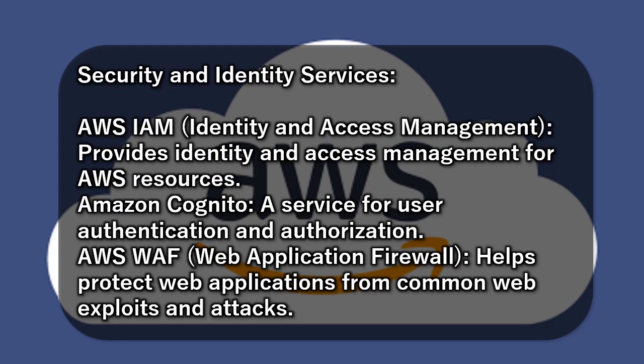Security and Identity Services: AWS IAM (Identity and Access Management) provides identity and access management for AWS resources. Amazon Cognito is a service for user authentication and authorization. AWS WAF (Web Application Firewall) helps protect web applications from common web exploits and attacks.